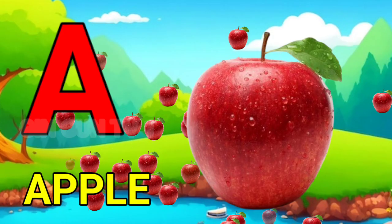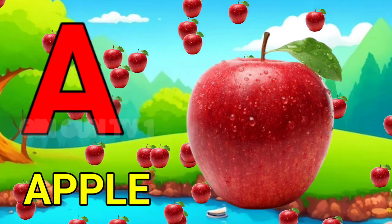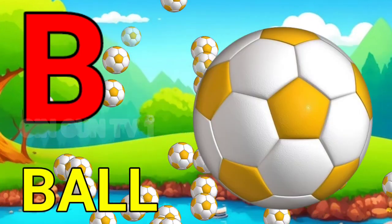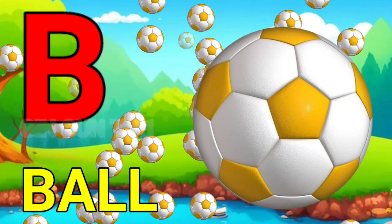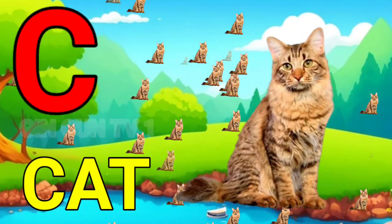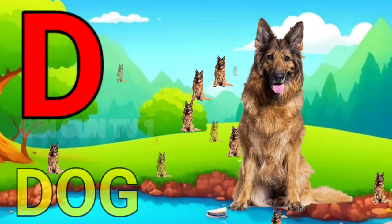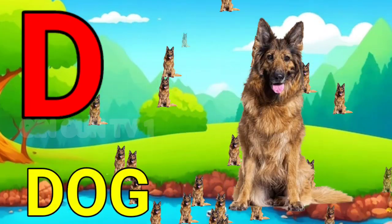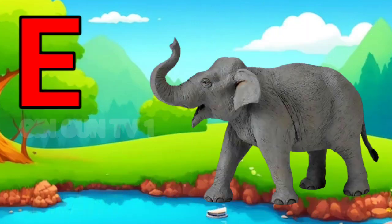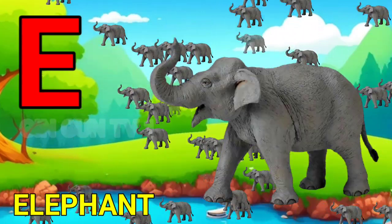A for apple, apple means save. B for ball, ball means gang. C for cat, cat means billy. D for dog, dog means kutta. E for elephant, elephant means hathi.